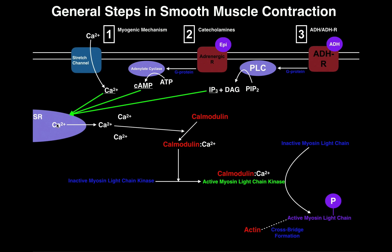Along with calcium, these three second messengers trigger the sarcoplasmic reticulum to release calcium into the cytosol, increasing intracellular calcium. That calcium binds to calmodulin, activating it. The calcium-calmodulin complex then binds to myosin light chain kinase, activating it. The activated kinase phosphorylates the inactive myosin light chain, activating it and allowing it to form a crossbridge with actin. So in the end, skeletal, cardiac, and smooth muscle all involve crossbridge formation to induce contraction.